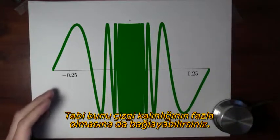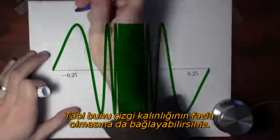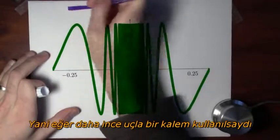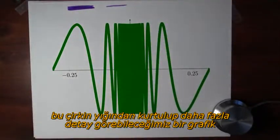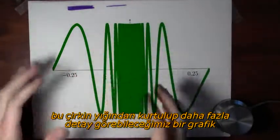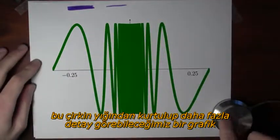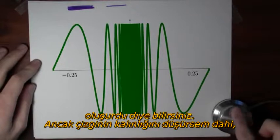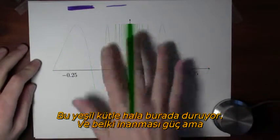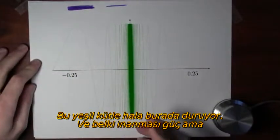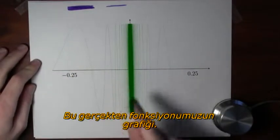You might think that's just a consequence of the fact that I'm drawing this graph with such thick lines, and if I used thinner lines to draw my graph, maybe I could get rid of this green blob and really see some detail. But even if I dial down the size of the lines that I'm using to draw this graph, the blob thing is still there. And it's really there in the graph of the function.